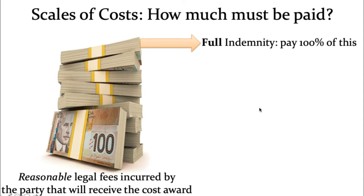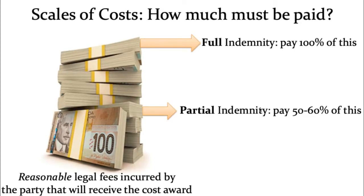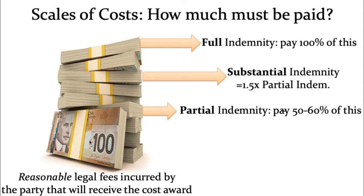Full indemnity would mean the other party pays you every penny you paid to your legal team — full indemnity awards are very rare. But if all those goals line up in your favor — you're completely successful at trial, the other side was problematic during the litigation, your fees were totally proportionate, and you made them a very generous settlement offer which they turned down and then you beat at trial — then you might get a full indemnity cost award. The most common cost award is partial indemnity, where the payor party pays 50 to 60% of the reasonable legal fees incurred by the party receiving the award. Our third option is substantial indemnity, where the rules say that equals 1.5 times the partial indemnity award.